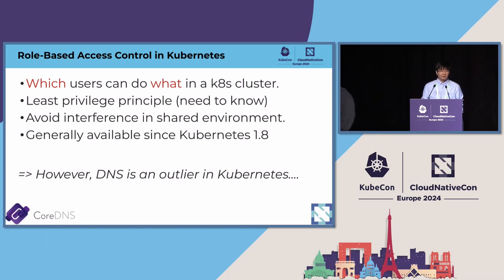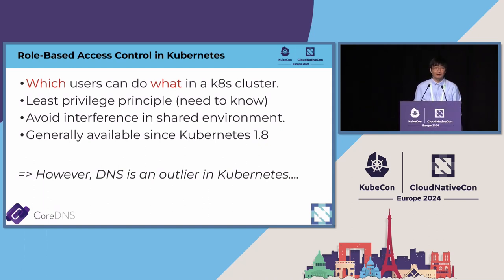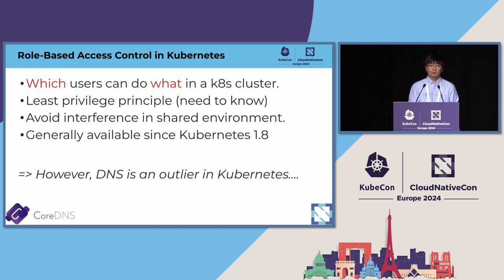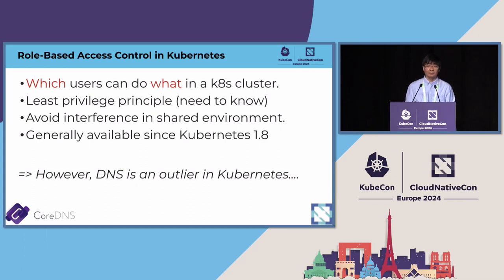To get started, before we talk about Kubernetes service information and DNS, let's briefly review role-based access control in Kubernetes. Role-based access control defines which user can do what in a Kubernetes cluster. The principle of RBAC is least privilege — you only want to expose information to users that absolutely need to know. RBAC has wide applicability in a shared environment.